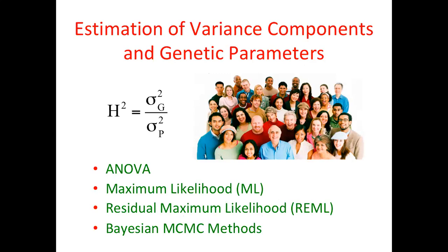A third component of these models, aside from estimating fixed and random effects, is the estimation of variance components and functions of those variance components such as heritability. We will discuss ANOVA methods and then maximum likelihood and REML — the residual maximum likelihood approach. We will also present Bayesian methods using MCMC, the Markov chain Monte Carlo approach.